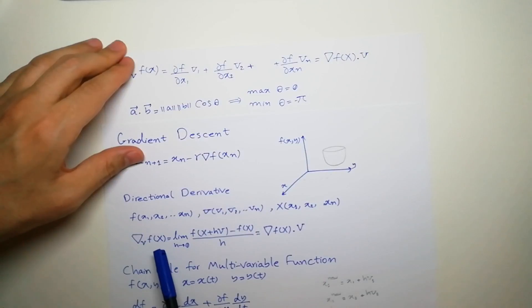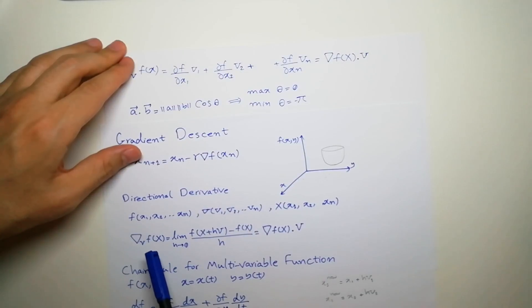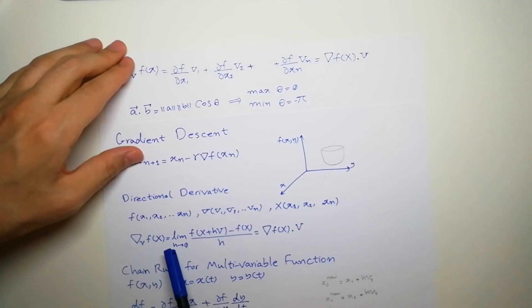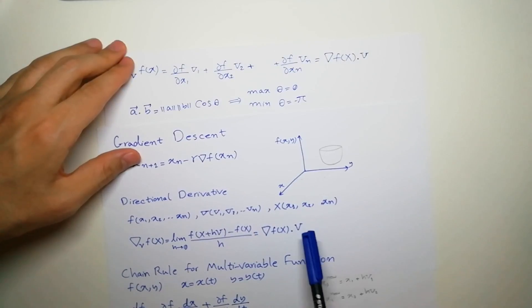So directional derivative of a function at a point x (capital X) in the direction v is actually the derivative of the function at that point multiplied by dot product by v.